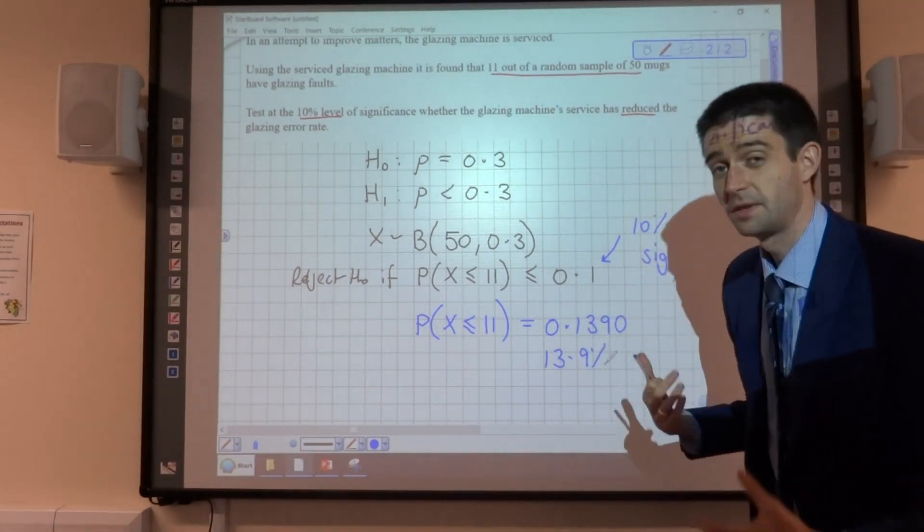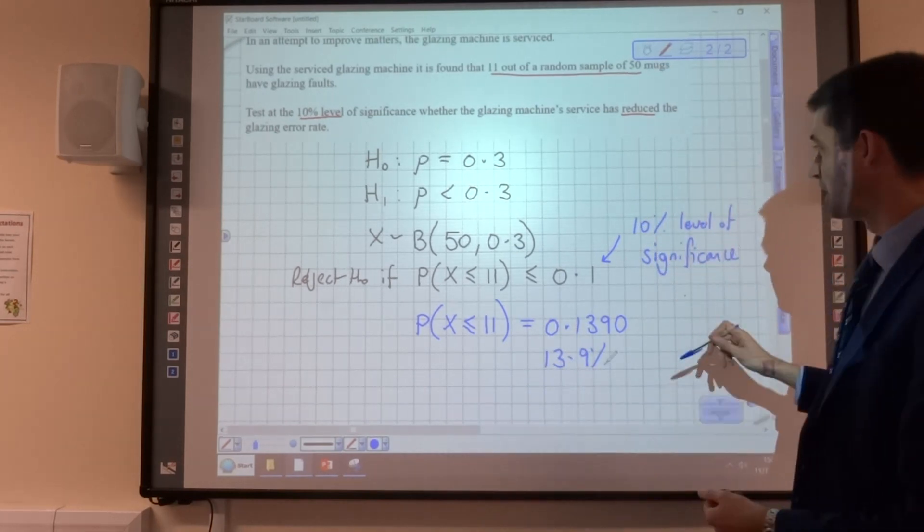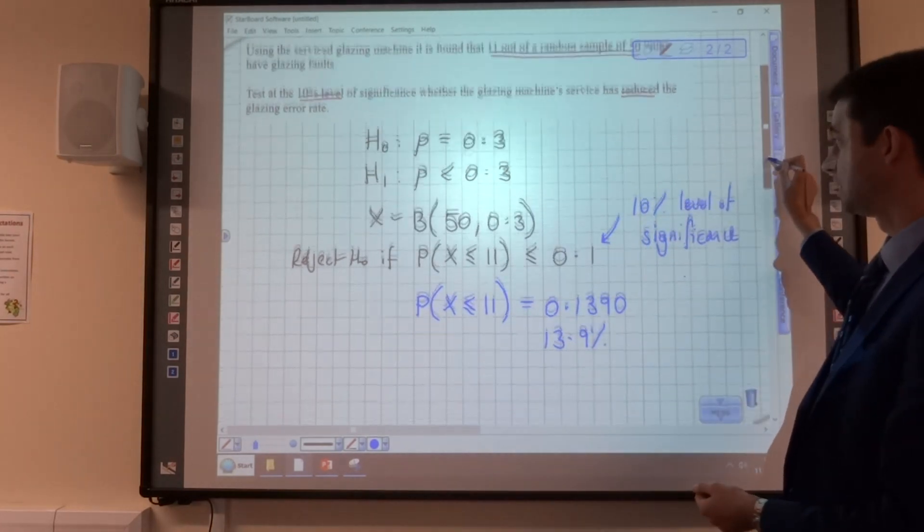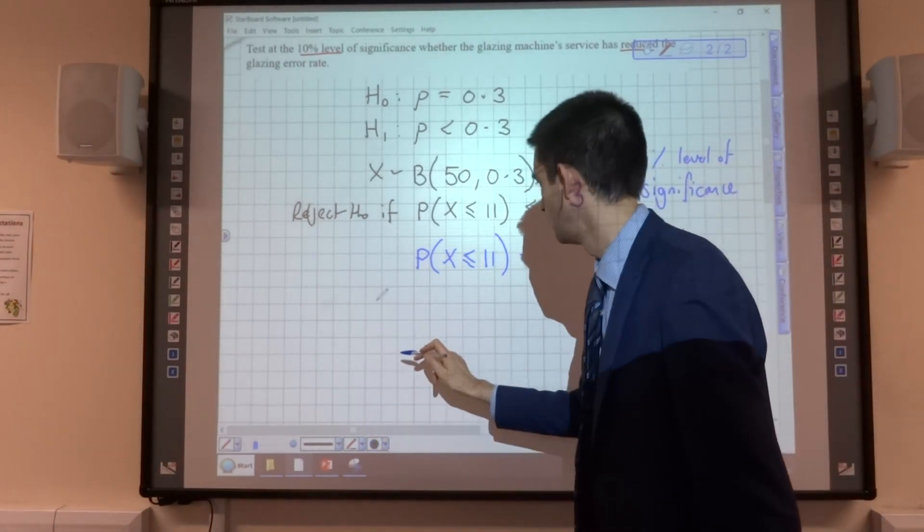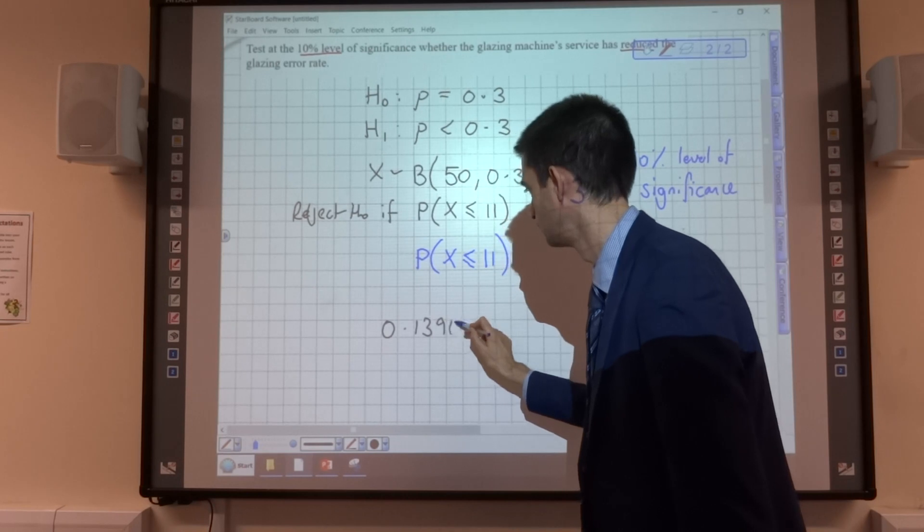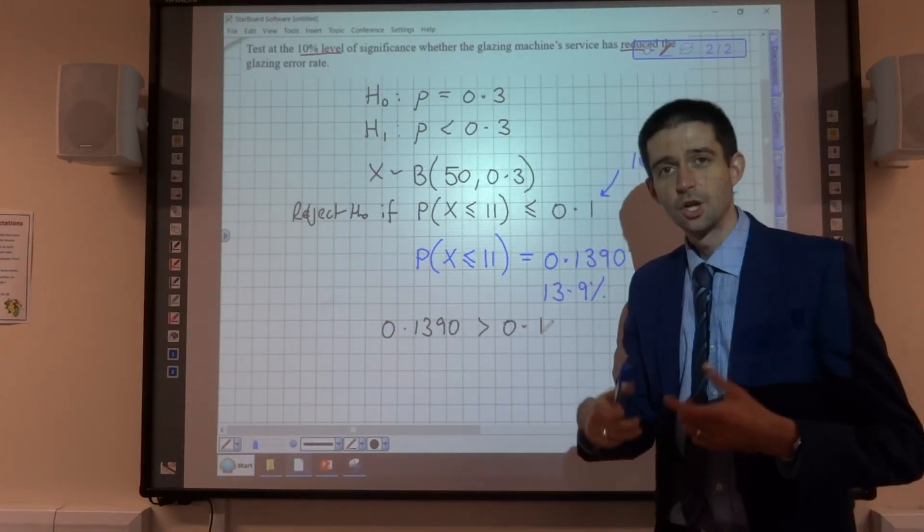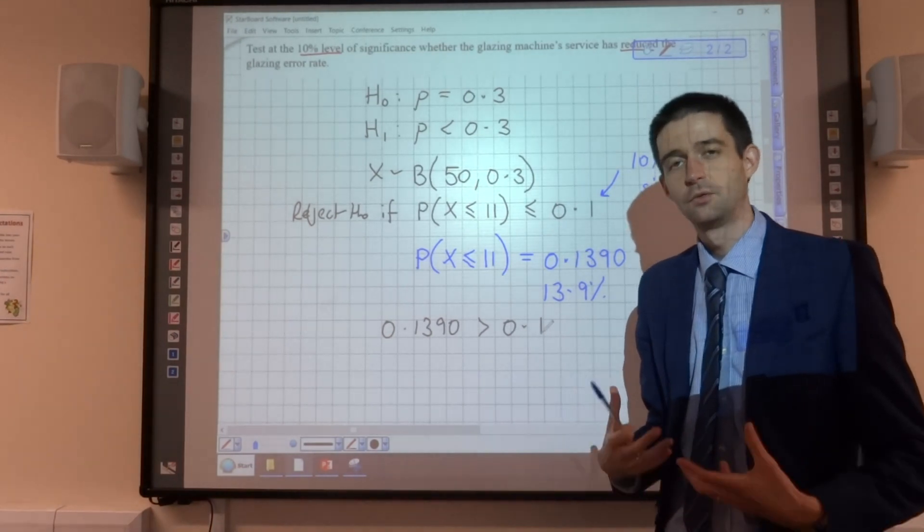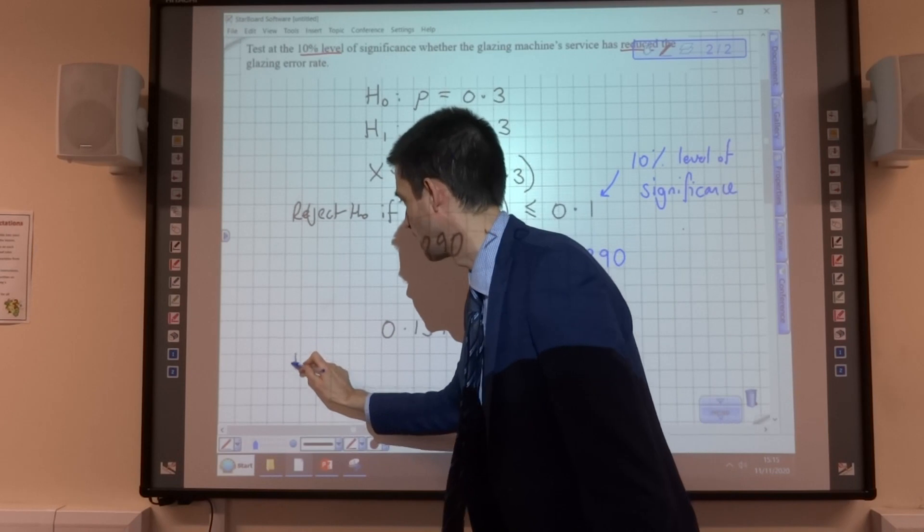So, the chance of that happening, 11 or fewer, is 13.9%. Now, I need to compare that to my significance level, and you can see that it's greater. So, the probability of that happening is greater than 0.1. So, not unlikely enough for us to reject our original assumption. So, here, we do not reject H₀.